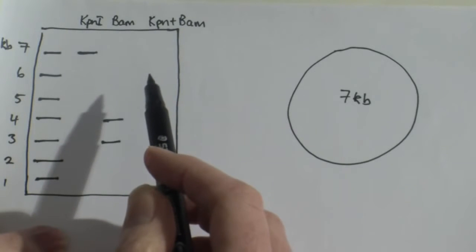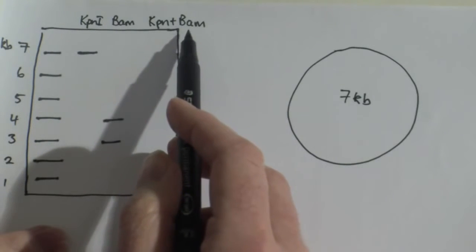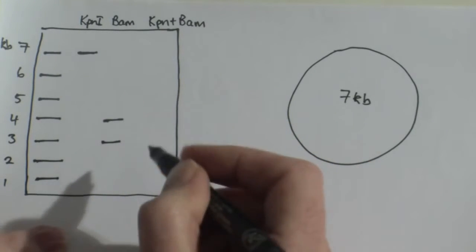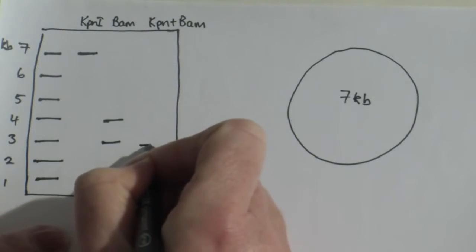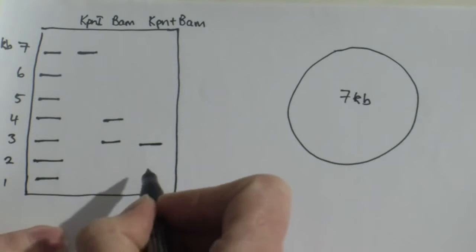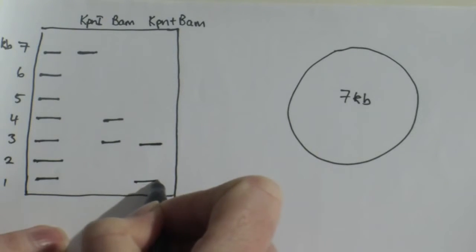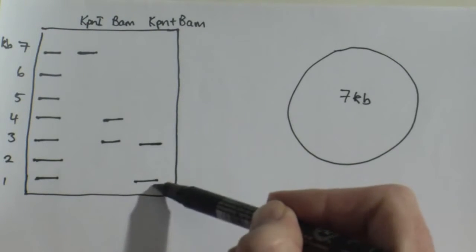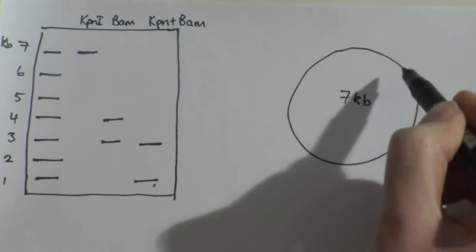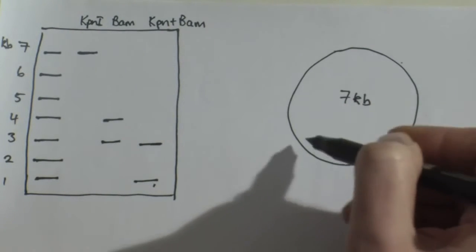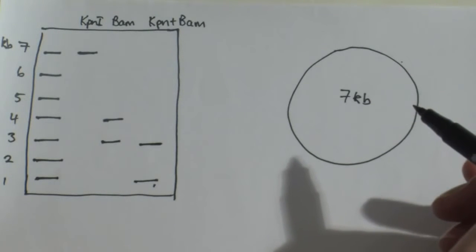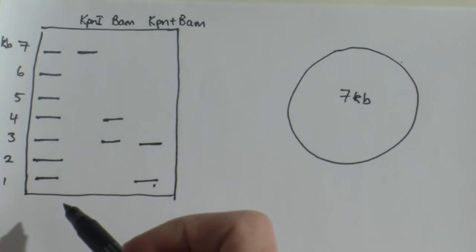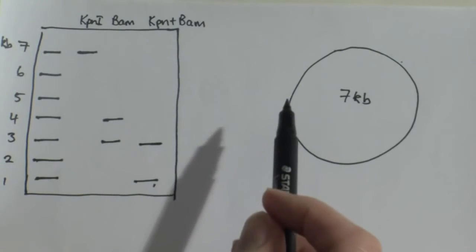Now if I do a double digest, in this example I use the KPN1 and BAM together, a double digest of the plasmid, gave me a different pattern of bands. And in this case I have a band here at 3kb and a band at 1kb down here. So the complication is trying to figure out how did I manage to get this banding pattern and where do the restriction sites occur in relation to each other on this plasmid. Now one of the things that we have to be sure of is that our banding patterns, the bands that we achieve, always will add up to the total sum of the plasmid. In this case it was 7kb.